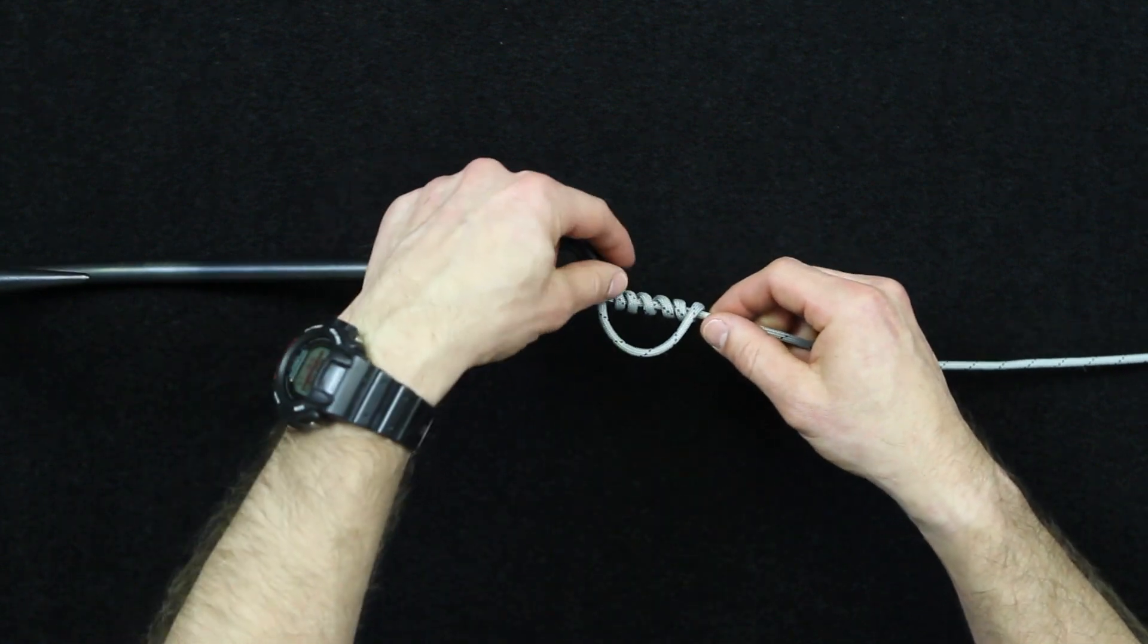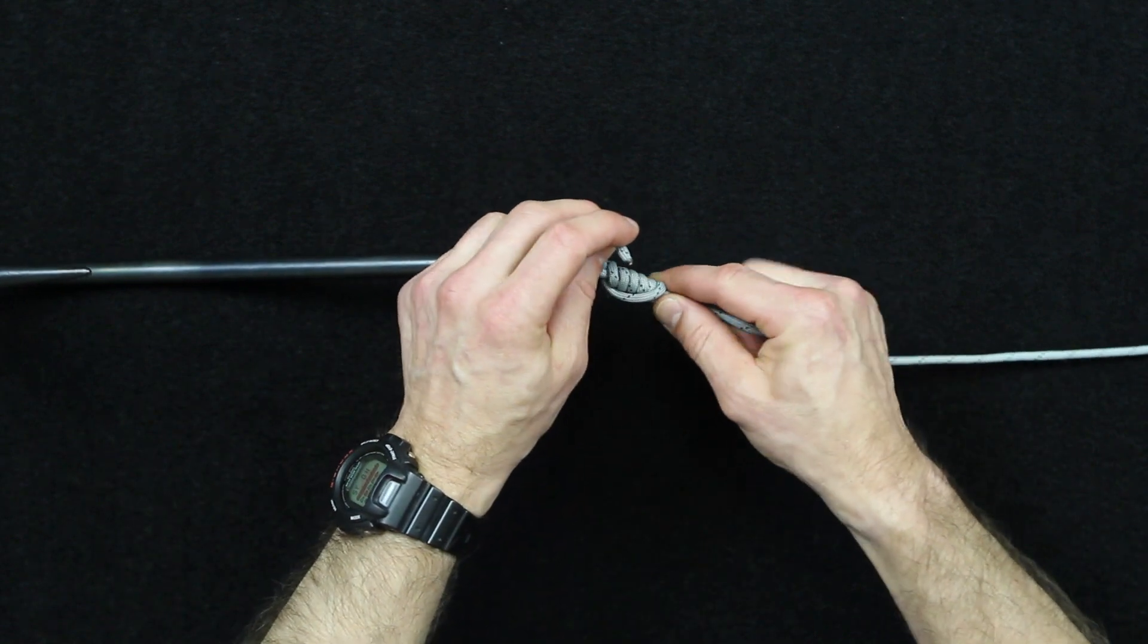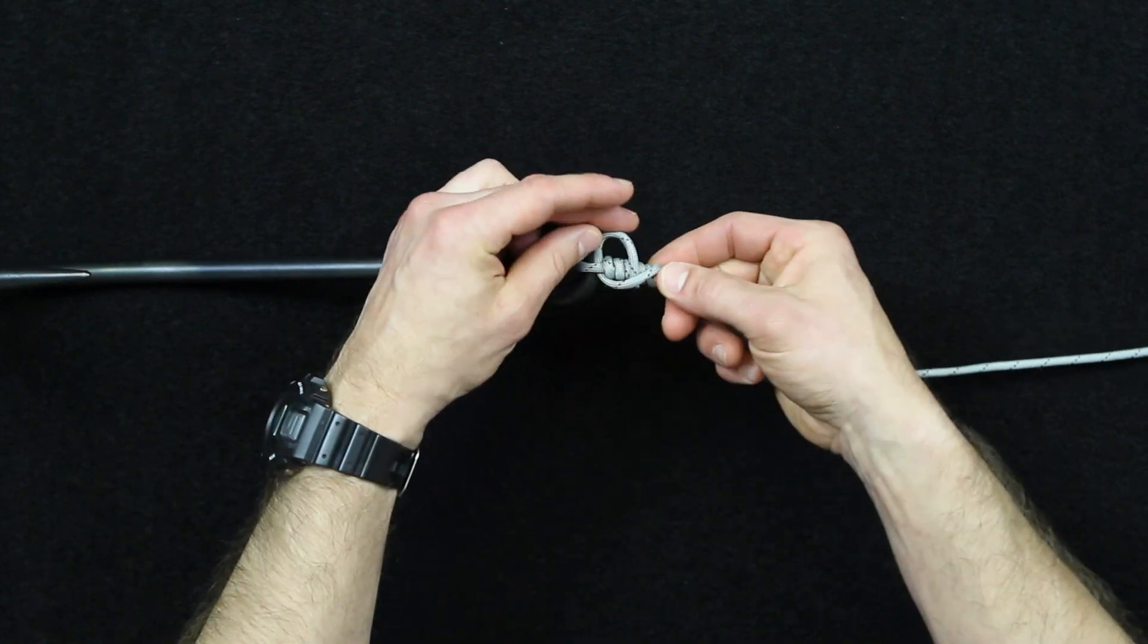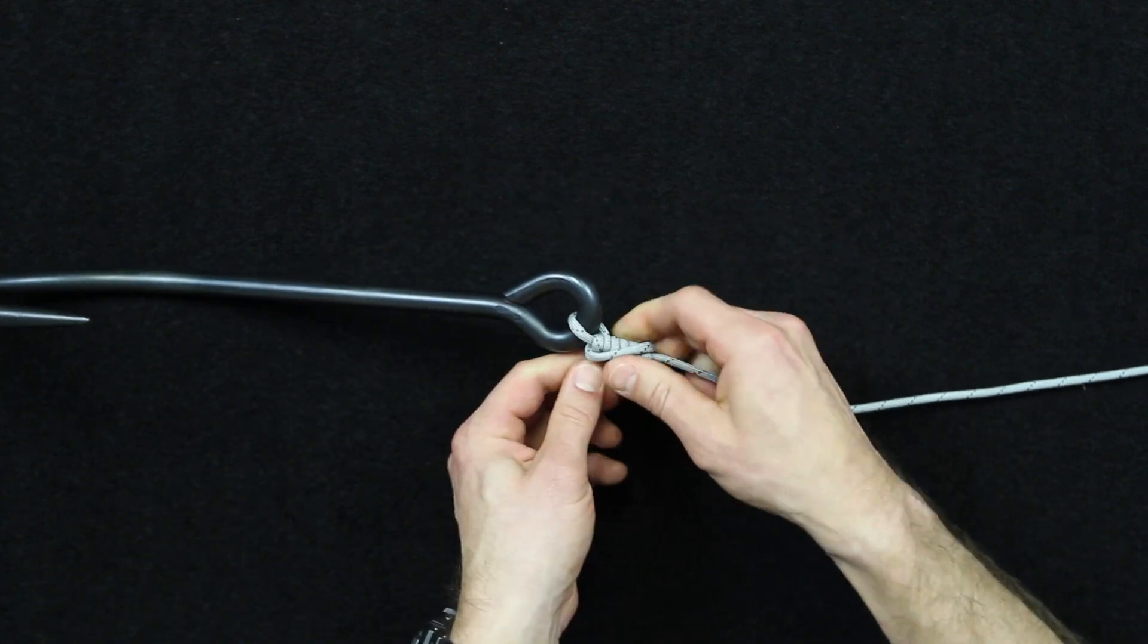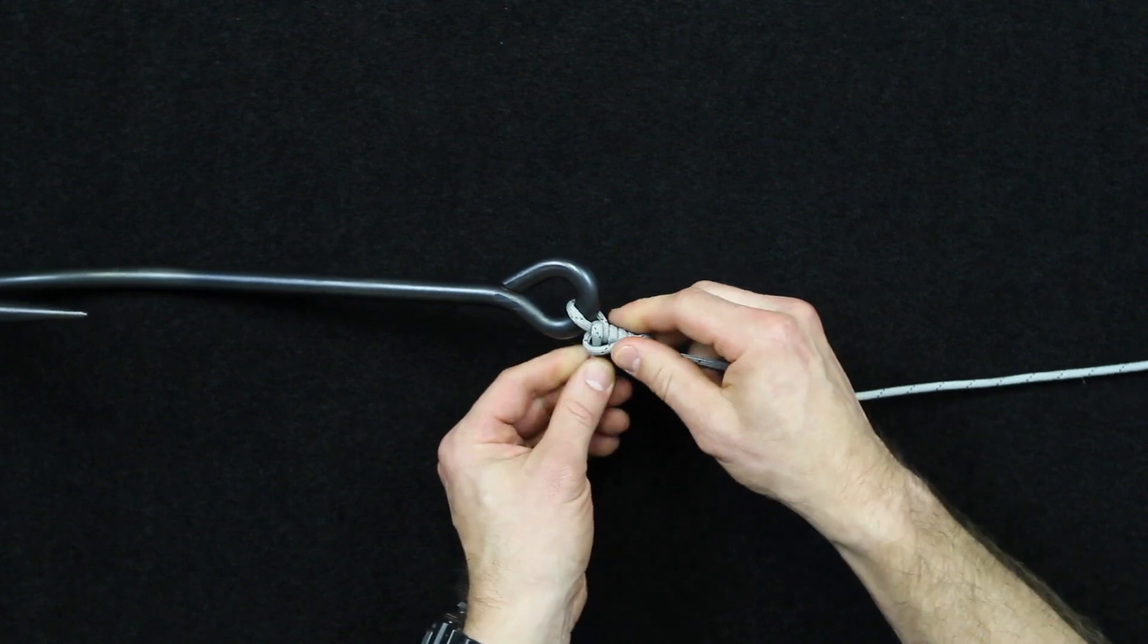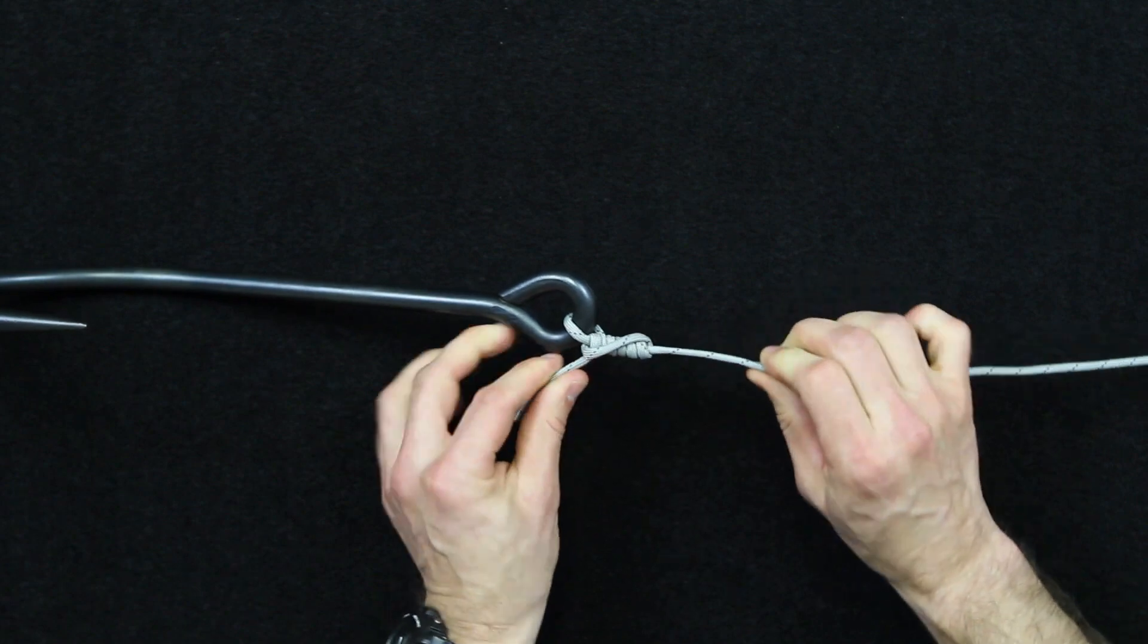Just pass that through and through that back side there. And then again once you get it tightened up it goes through the standing part there. Then you pull it down, tighten everything up. And that is the modified clinch knot.